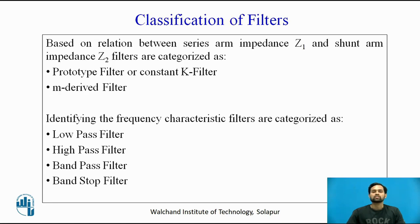Based on the relation between series arm impedance Z1 and shunt arm impedance Z2, filters are categorized as prototype filters or constant K filters. The product of Z1 and Z2 is represented by R0 squared, which is constant — hence the letter K is used. If this product is constant, the filter is called a prototype or constant K filter. Another type is the M-derived filter, which is designed with the help of a prototype or constant K filter. Filters are also categorized based on their frequency characteristics.